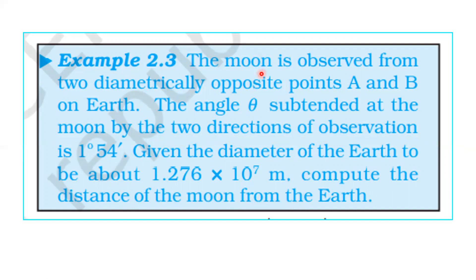The moon is observed from two diametrically opposite points A and B on the Earth. The angle theta is subtended at the moon by the two directions of observation. Given the diameter of the Earth is 1.276×10⁷ meters.